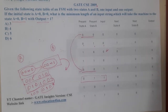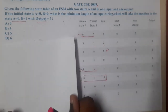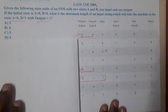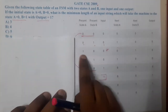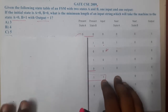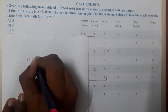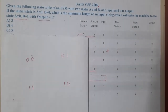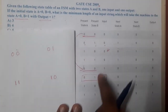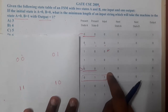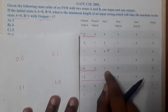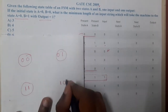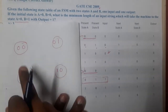Rather than solving in this chain manner, let us draw the state diagram — it will be much clearer. The different states are: (0,0), (0,1), (1,0), and (1,1). There are four total states. The outputs also vary depending on the input, so let us start drawing the diagram.